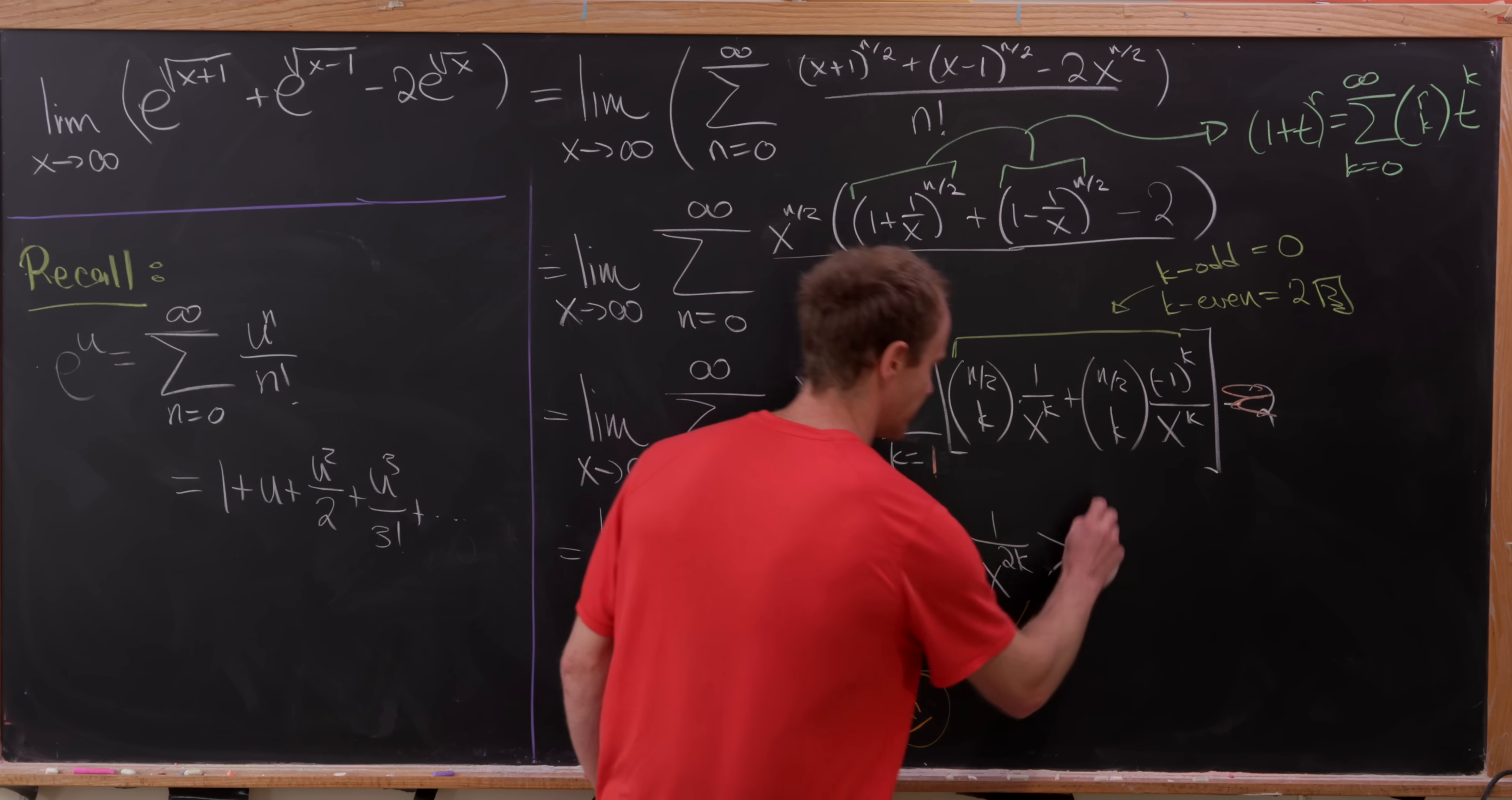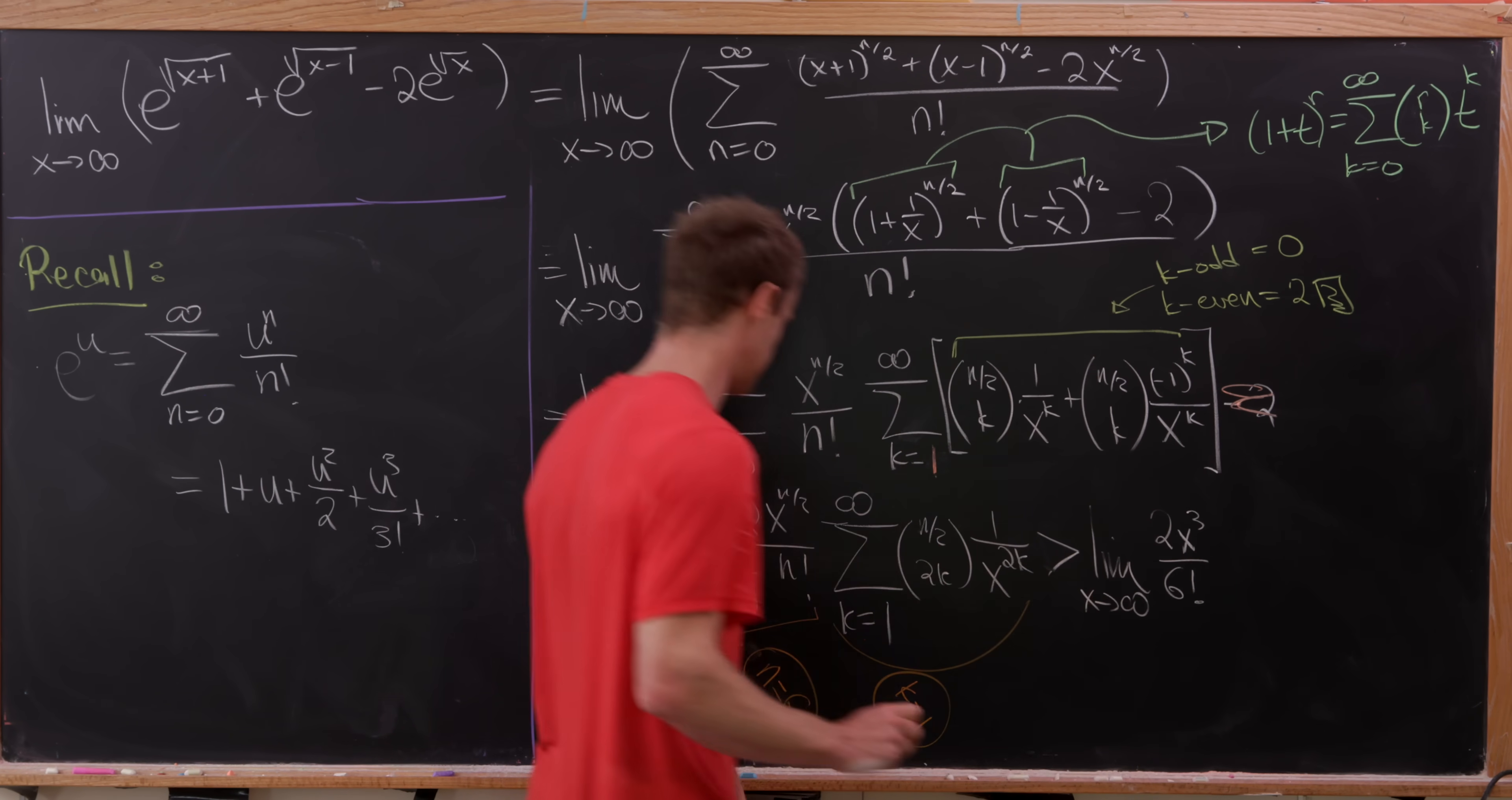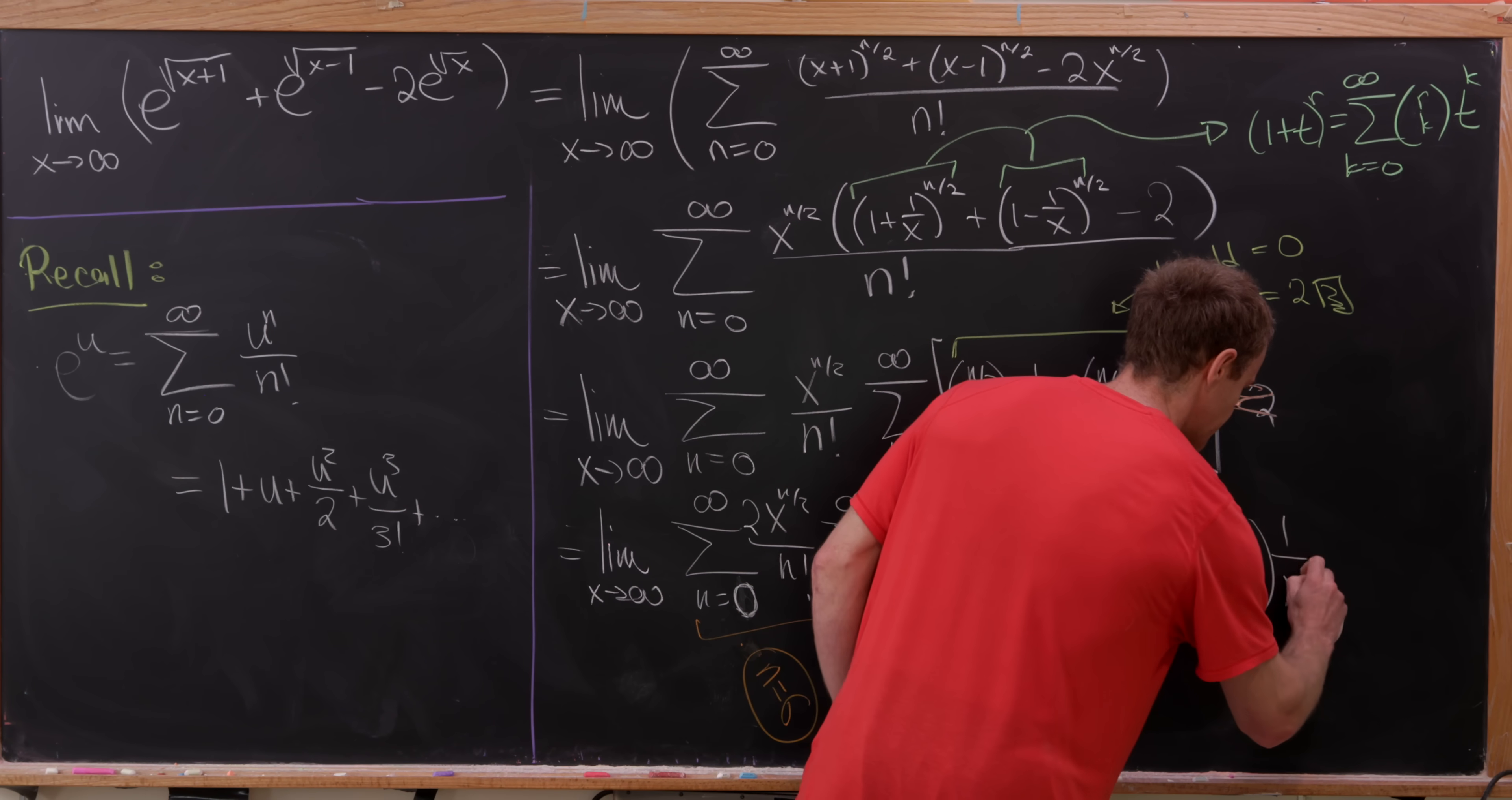So this is all going to be bigger than the limit as x goes to infinity of, well, the n equals 6 term is going to give us what? So we're going to have 2x cubed over 6 factorial. And then, well, what's the k equals 1 term here? Well, it's going to be, let's see, a half choose 2. So a half choose 2, which that can be calculated, that's just a finite number. And then after that, 1 over x squared.